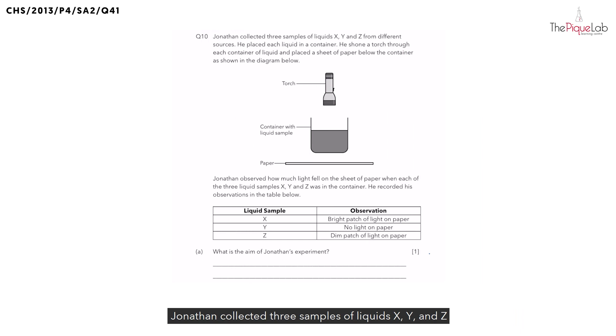Jonathan collected three samples of liquids X, Y, and Z from different sources. He then placed each liquid in a container and he shines a torch through each container of liquid and placed a sheet of paper below the container as shown in the diagram. Now what did he then observe? He then observed how much light fell on the sheet of paper when each of the liquid samples was in the container, and then he recorded his observations in the table below.